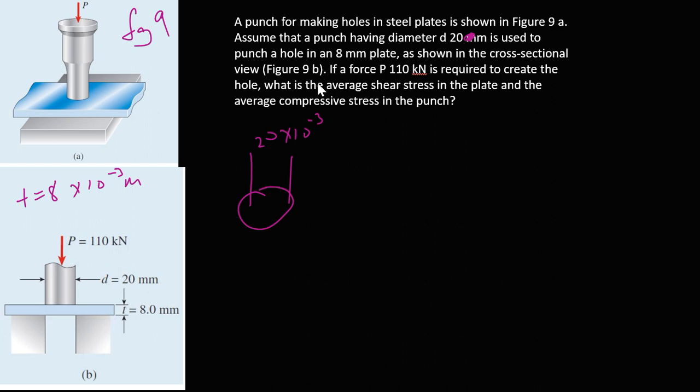And as shown in the cross-section, part B, if force P of 110 kilonewtons, we also hate kilo, so times 10 to the power 3 newtons, that is going to be our force.